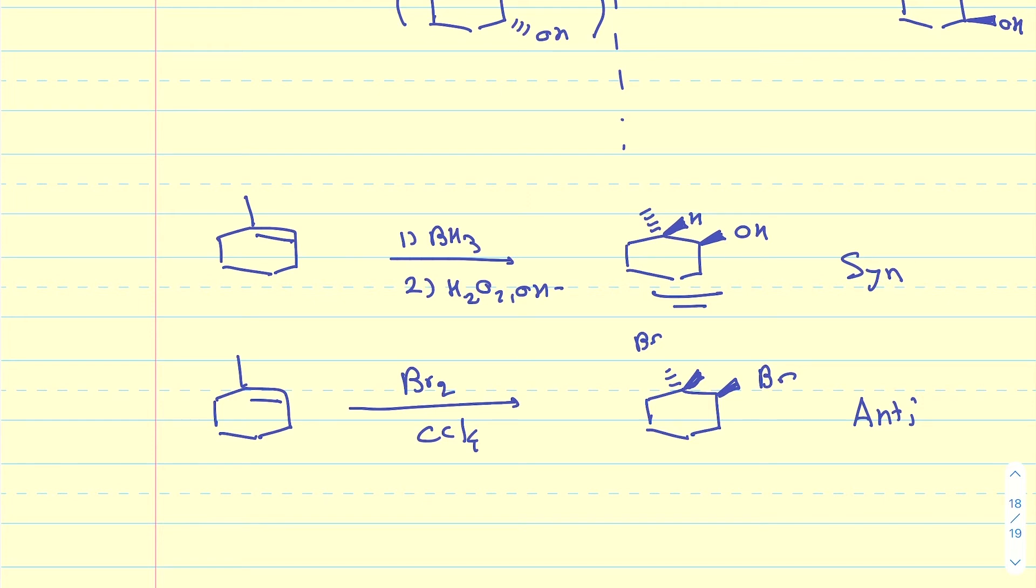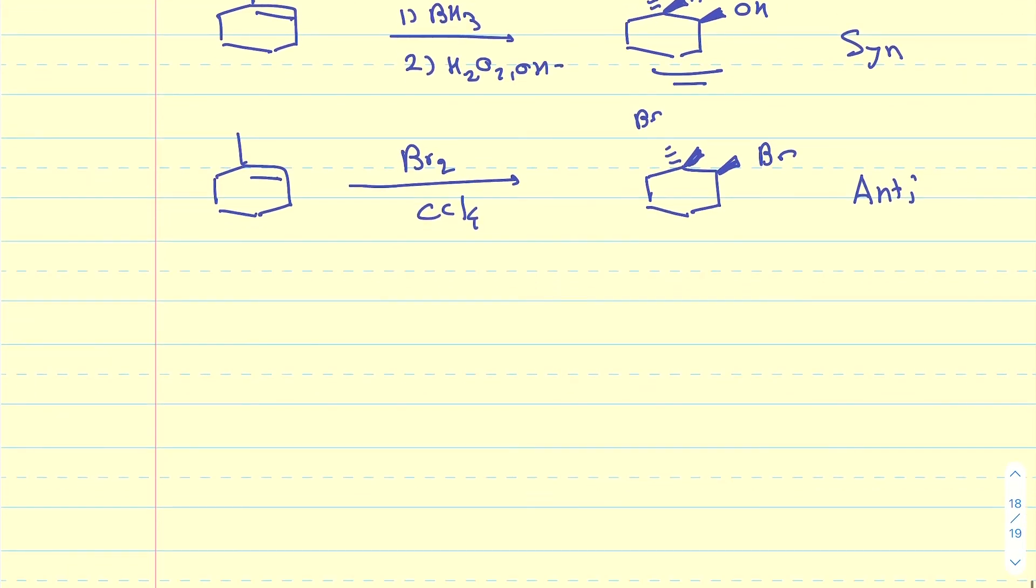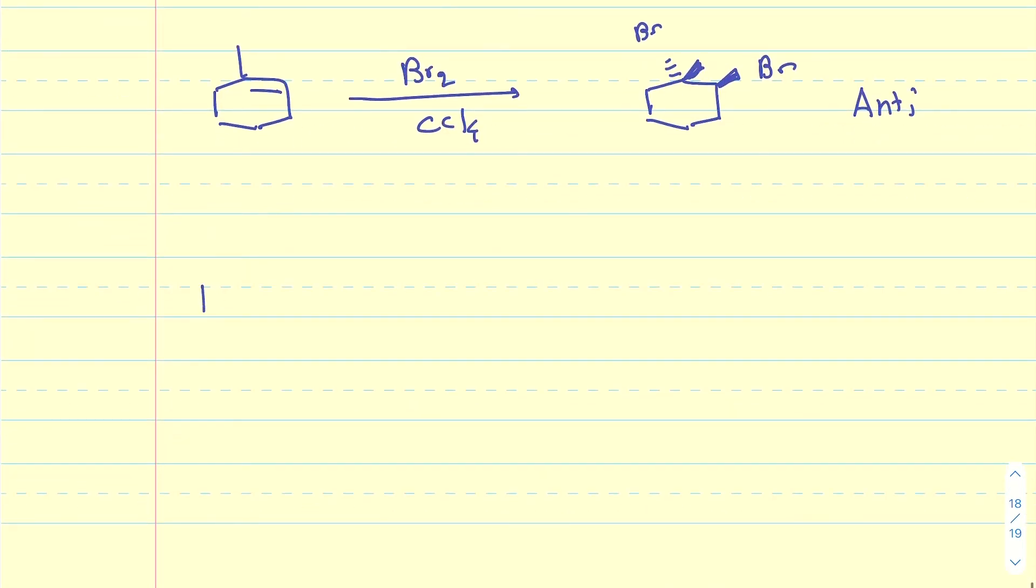The stereochemistry of the addition may not be well-defined. For instance, if I'm adding HBr to this alkene that I used as an example, here's how the mechanism is going to go. The hydrogen is going to be added to form a carbocation, but the hydrogen could be added from either face. It could be added from top or bottom.